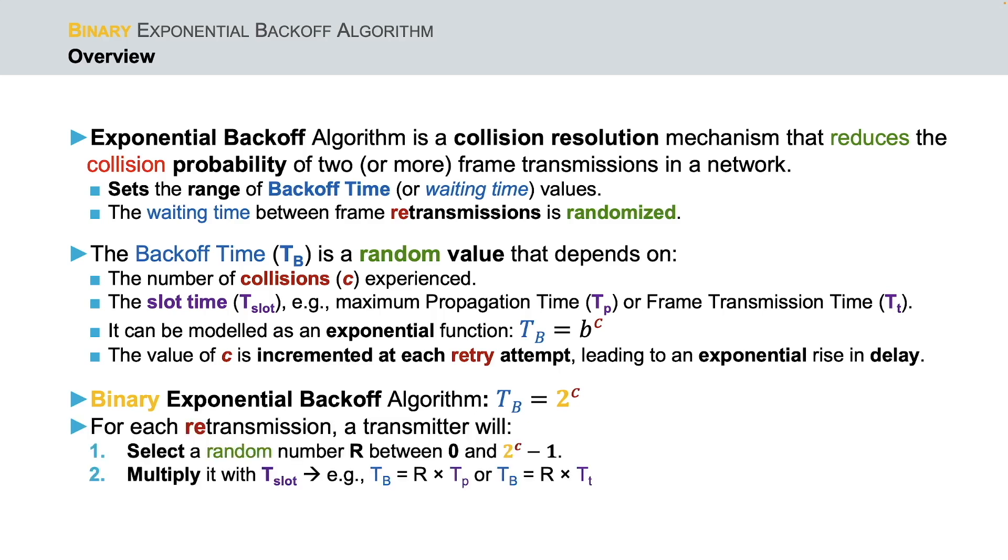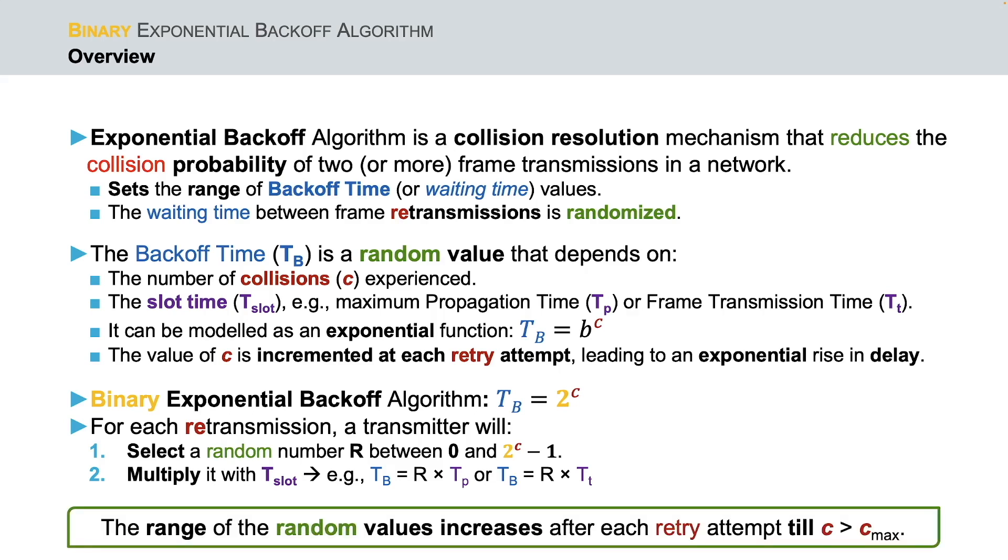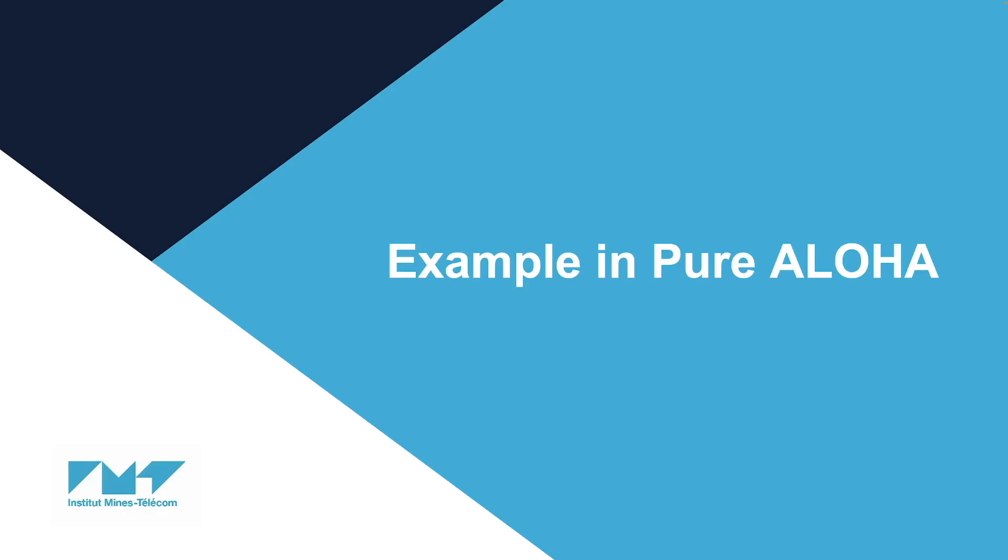In binary exponential backoff algorithm, the transmitting node for each retransmission will select a random number r between 0 and 2^c minus 1, and will multiply it with t_slot, which in turn is computed, for example, based on maximum propagation time or frame transmission time. Note that the range of the random values increases after each unsuccessful transmission attempt, till c is larger than predefined c_max.